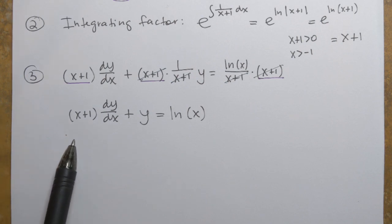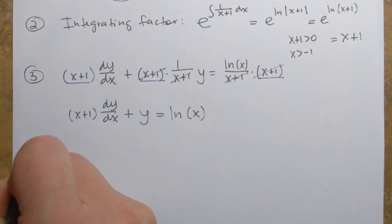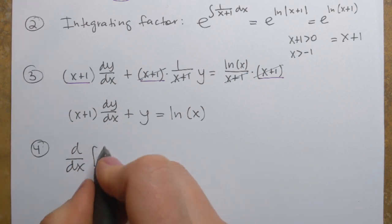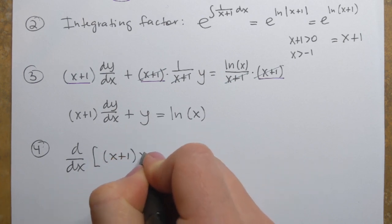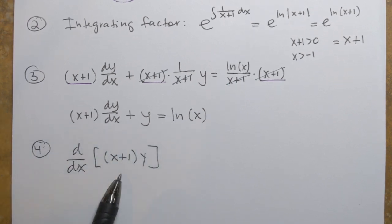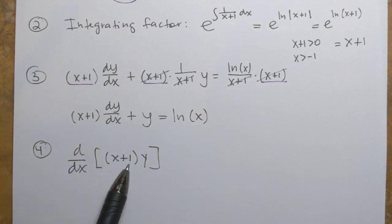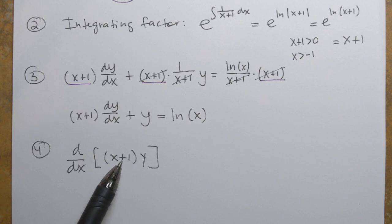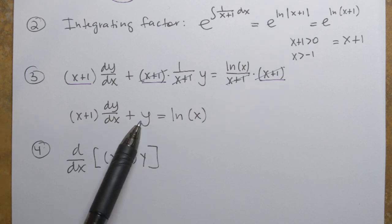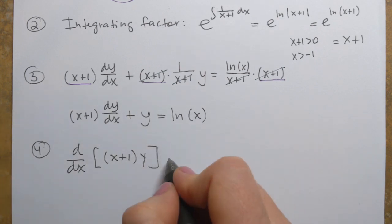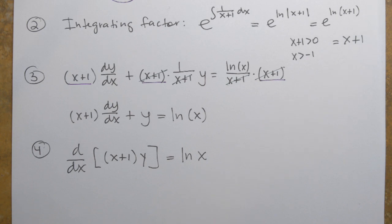In step 4, we rewrite the left-hand side as d/dx of the product of the integrating factor (x plus 1) and y. Let's verify using the product rule: first term times derivative of the second gives (x plus 1) dy/dx, and derivative of the first term (which is 1) times the second gives y. So yes, the left-hand side can be written as d/dx[(x plus 1)y] equals ln(x).